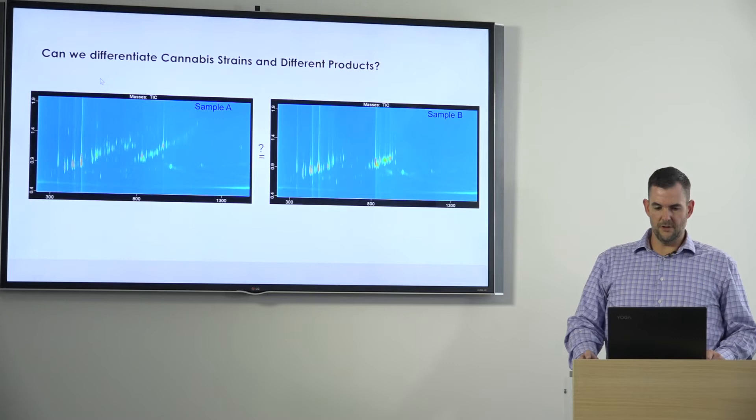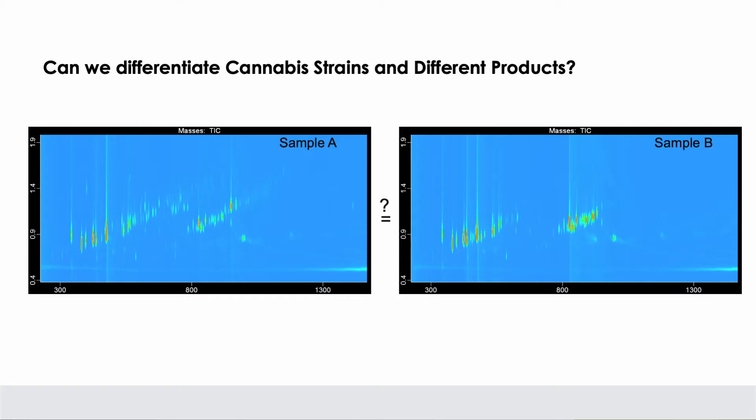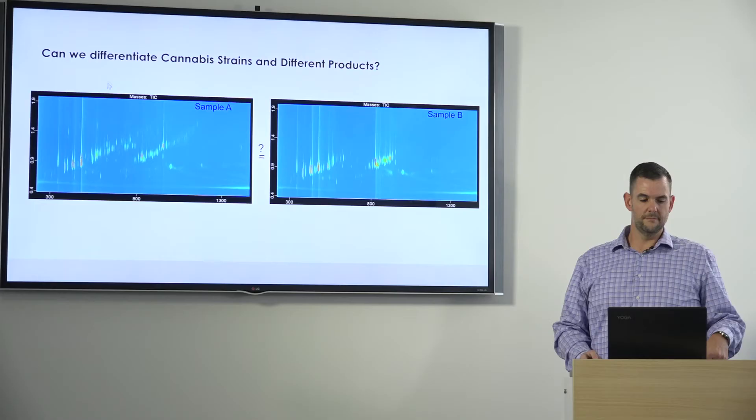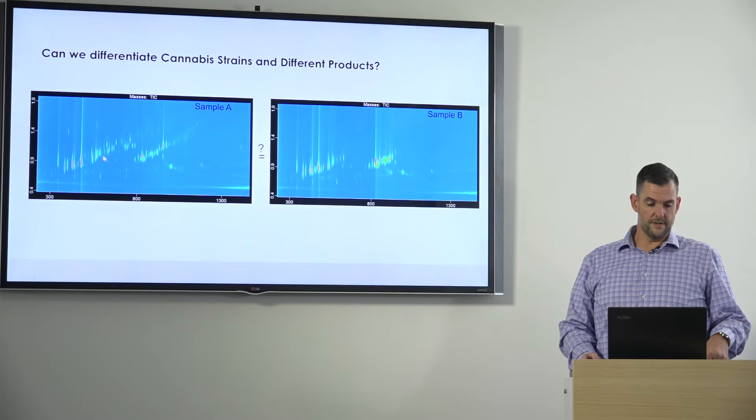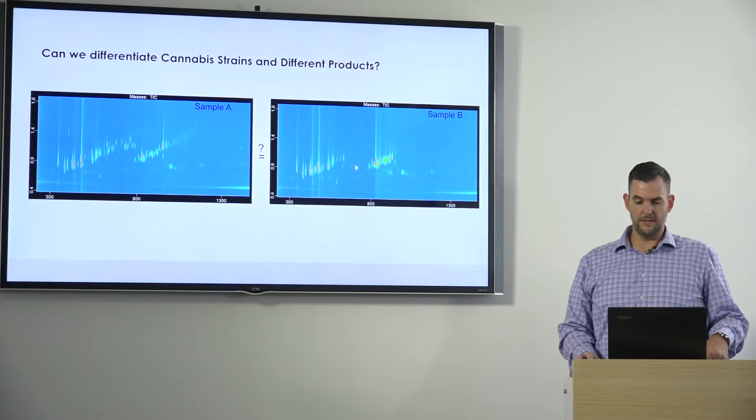I show two different contour plots here in this slide, and it appears that based on these two analyses we're able to differentiate differences between the two. You can see in this particular region right here there are differences in sample A, whereas sample B does not have that particular class of compounds present.